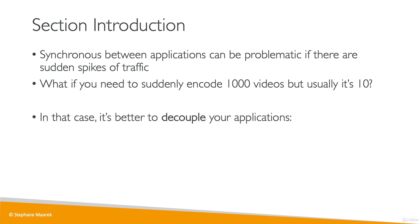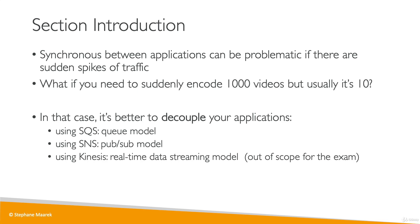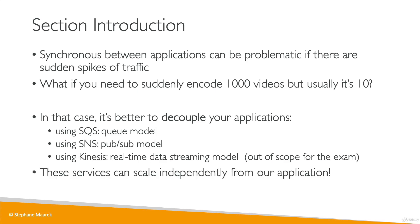In that case, it's much better to decouple your applications using something like SQS, which is a queue model, or SNS, which is a pub/sub model, or Kinesis, which is used for real-time data streaming — though Kinesis is out of scope for the Certified Cloud Practitioner exam. Once decoupled, these services can scale independently from your applications, which is great. In this section, we'll take a deeper look at SQS and SNS.